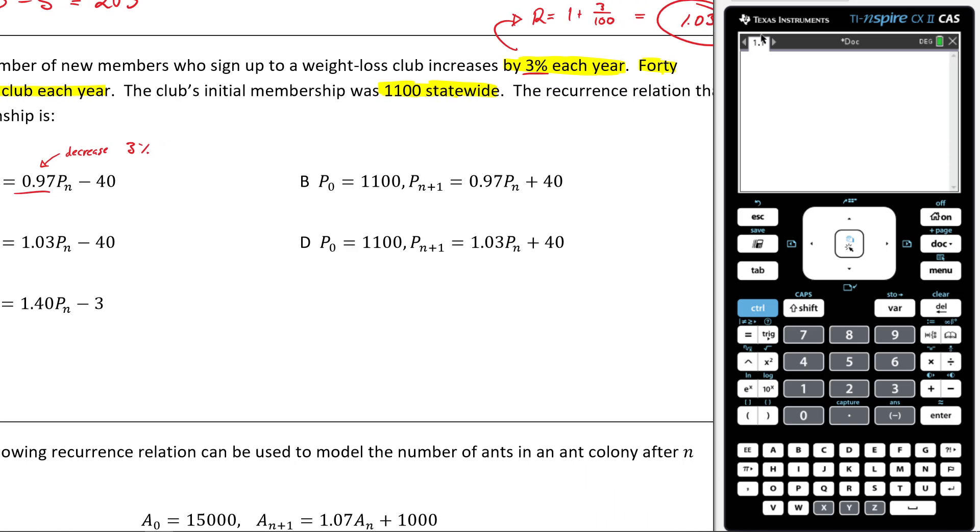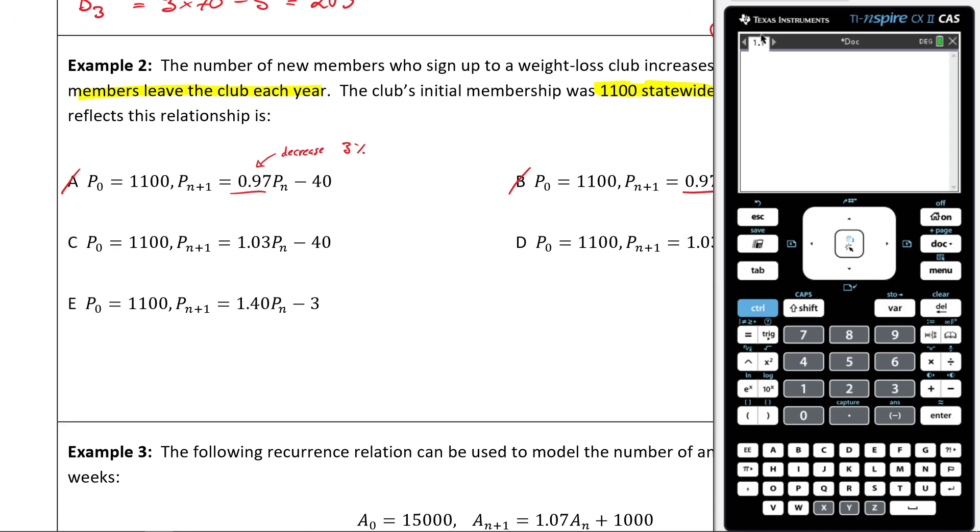Let's go to B. Well, this is also wrong because we've got 0.97. That's no good. That's decreasing. It's also no good because we're plussing 40. When we don't want to be plussing 40, we want to be minusing 40. We come to this one. This looks good. That looks good because it's increasing by 3% every year, and we're subtracting 40. C is my answer.